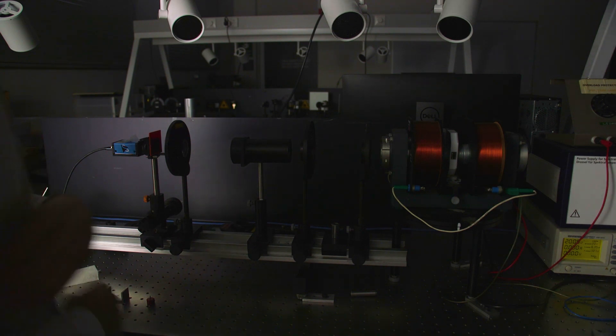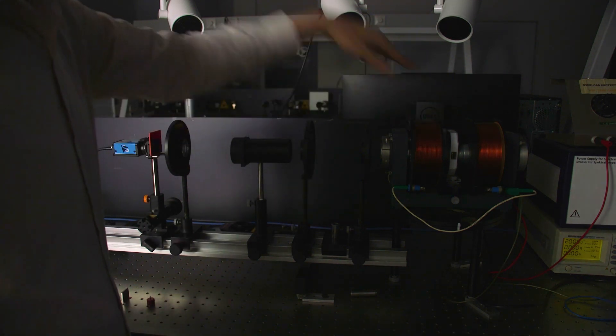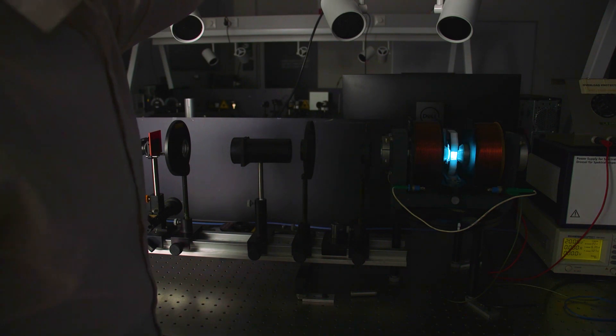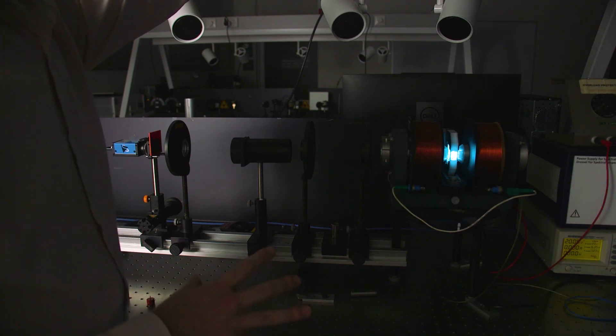To start off with we have a cadmium discharge lamp, so if we turn that on we see this pleasant blue-white color. This color is made up of several different wavelengths and we only care to isolate a single red wavelength.